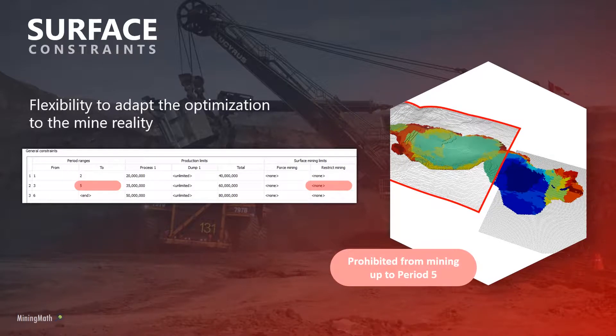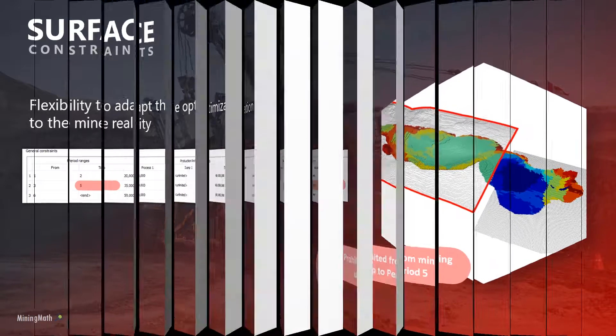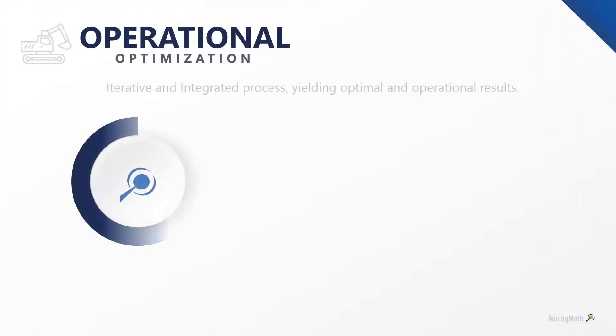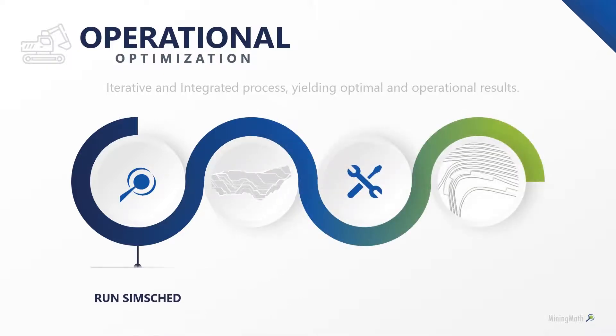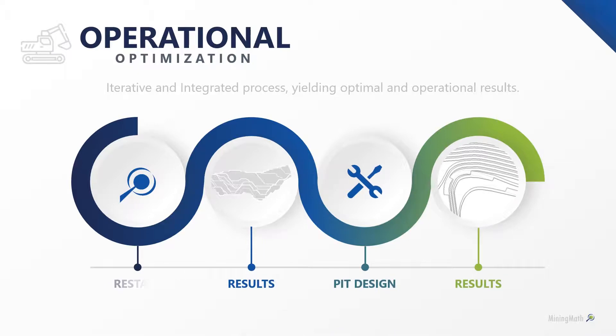This allows for the modeling of in-pit crushers and waste dumps, environmental and social constraints, or any other physical limitations. It's also possible to import designed pits and/or phases back into SimSched, cycling between optimization and design, aiming for a more realistic final result.